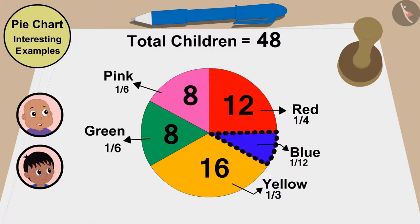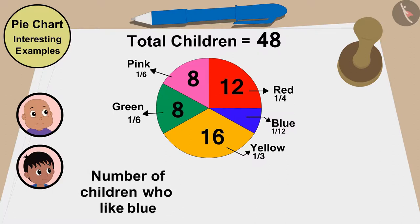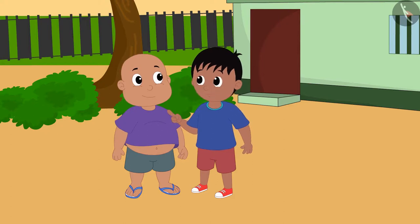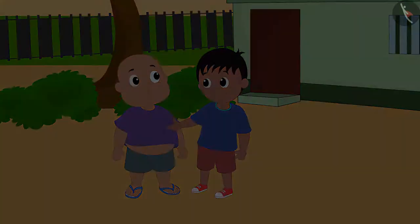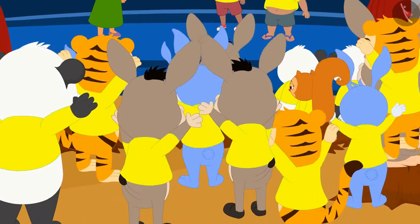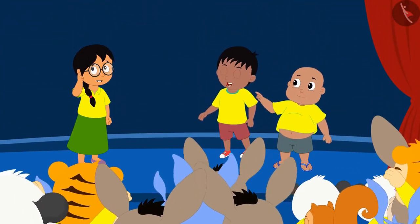Babloo says he likes blue a lot, but in this pie chart the share of children who like blue is the smallest. The number of children who like blue is 48 times one twelfth, or 48 divided by 12, which is 4 — and Babloo is one of them! Raju and Babloo quickly told Mrs. Khan that most children like yellow, and then all the children celebrated the annual festival with great enthusiasm wearing yellow shirts.